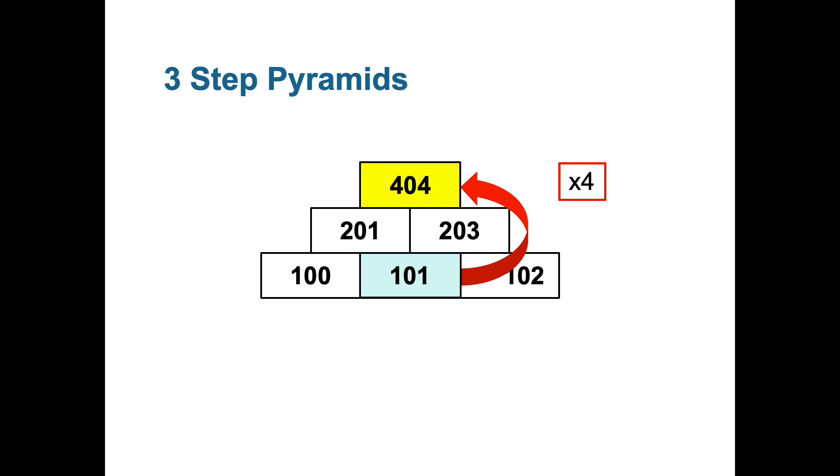Finally, 201 plus 203 is in fact 404. So this rule of multiplying by four looks like it works.